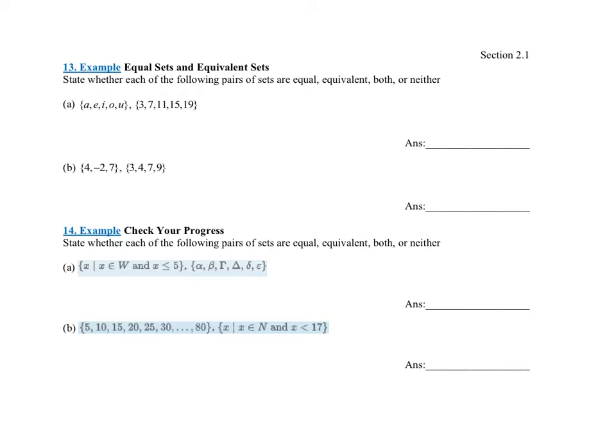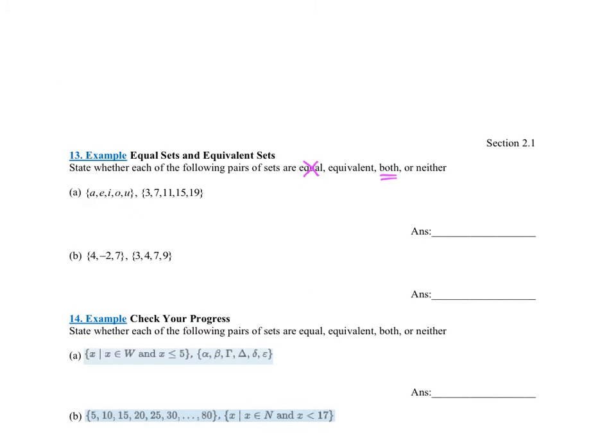So there's the next question right there. It says state whether each of the following pairs is equal, equivalent, both, or neither. If you just watched the previous video, remember we would never answer equal here because if it is equal it is both. Let's remind ourselves what does equivalent mean. A equivalent to B means same number of elements. A equal to B means same number of elements.